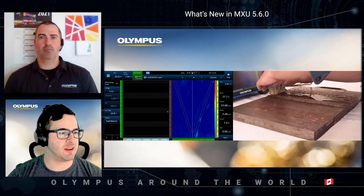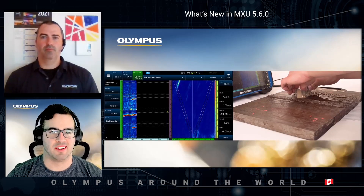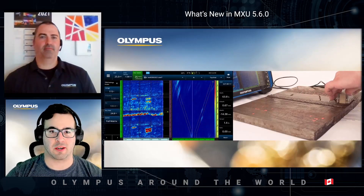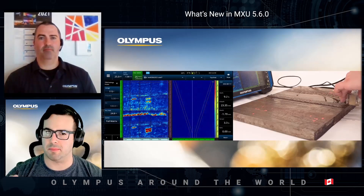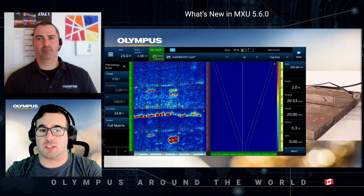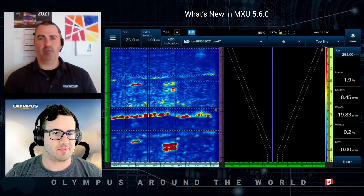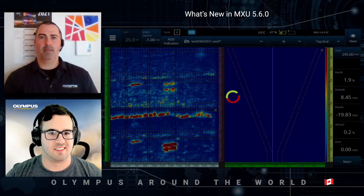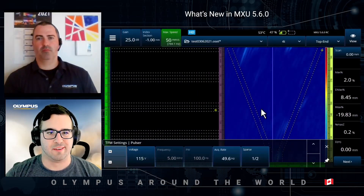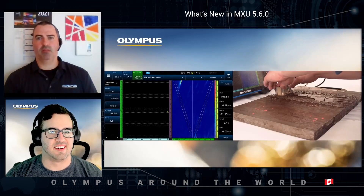On the left you can see the screen of the OmniScan X3 and on the right my hand scanning the plate. There is a black bar on the screen, meaning no data was acquired because I was moving a bit too fast. Once I scanned the part more slowly, you can see the result. At full matrix, you are limited to 25 millimeters per second. Now I'll switch the matrix to one-on-two, which increases the acquisition rate — basically doubling it.